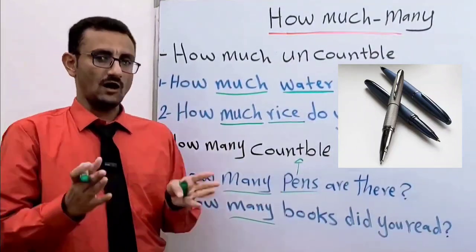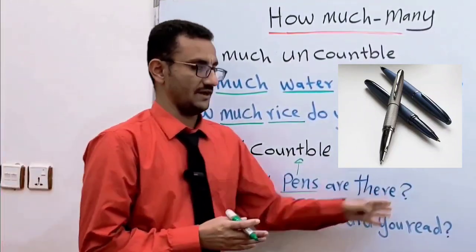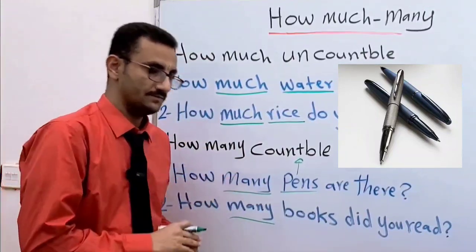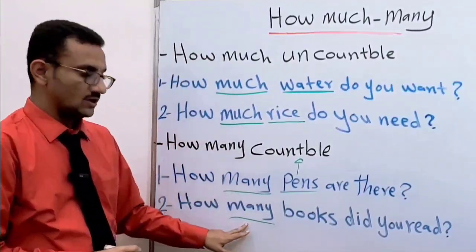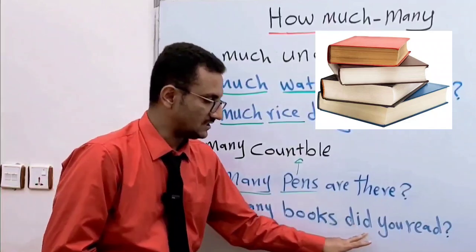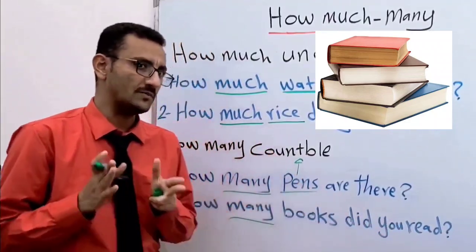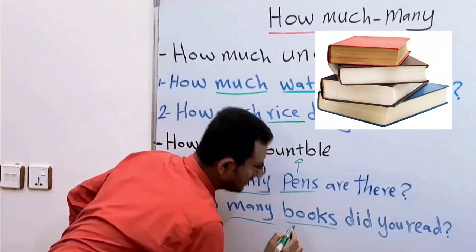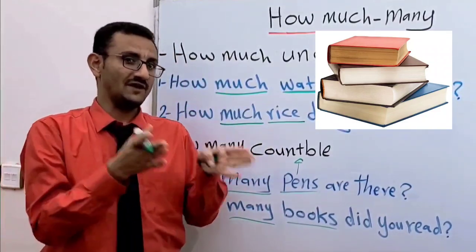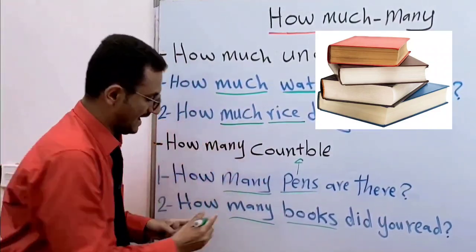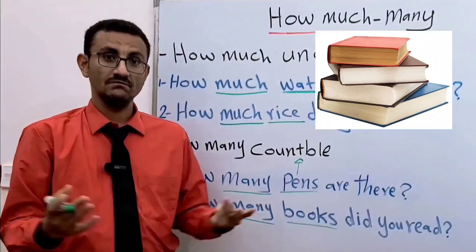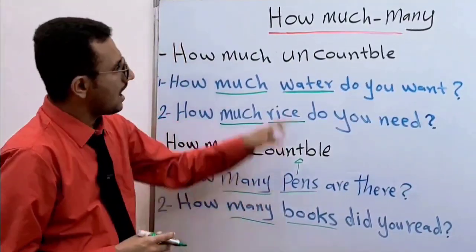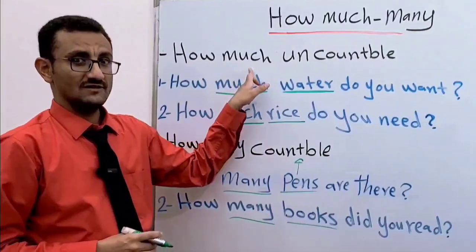How many pens are there? How many books did you read? Here, books is a countable noun, so we use 'how many'. 'How much' is used for uncountable nouns.